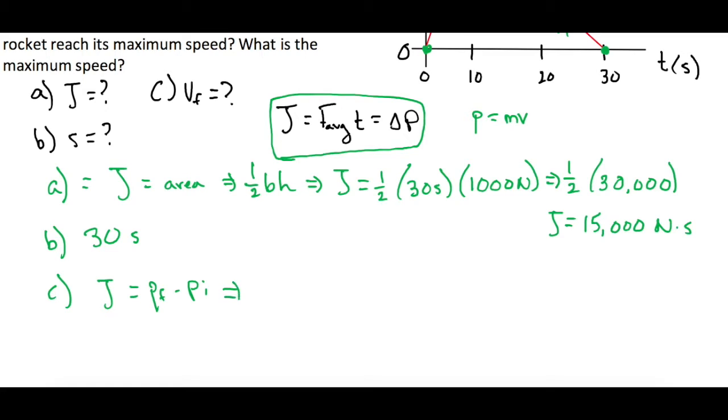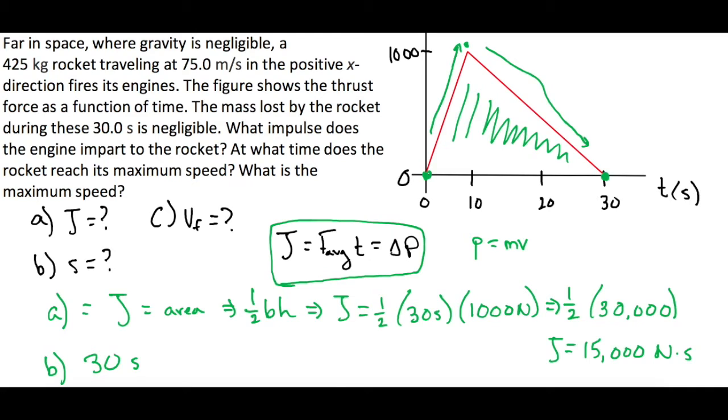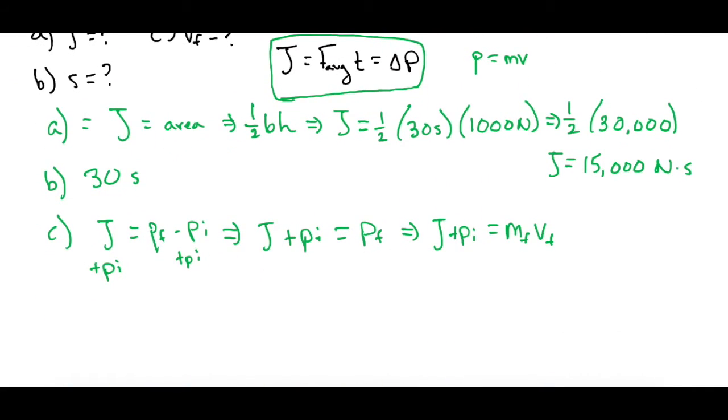Let's isolate the final velocity. J plus P initial equals P final. Breaking that up, J plus the initial momentum equals the final mass times the final velocity. The problem says mass lost is negligible, so the final mass equals the initial mass. Dividing both sides by mass, we get the final velocity equals J plus P initial divided by mass.